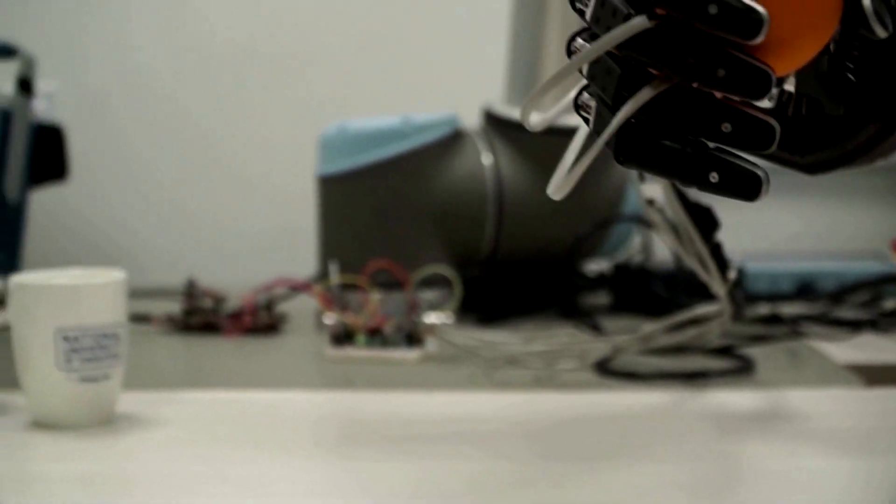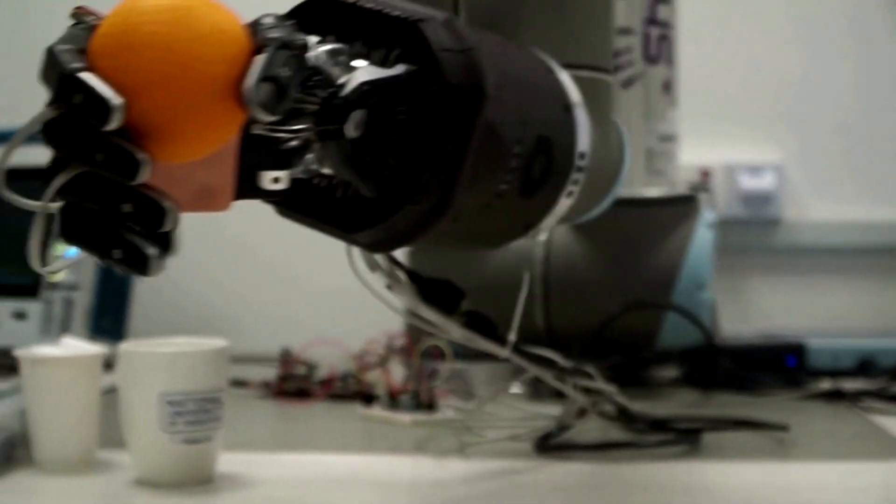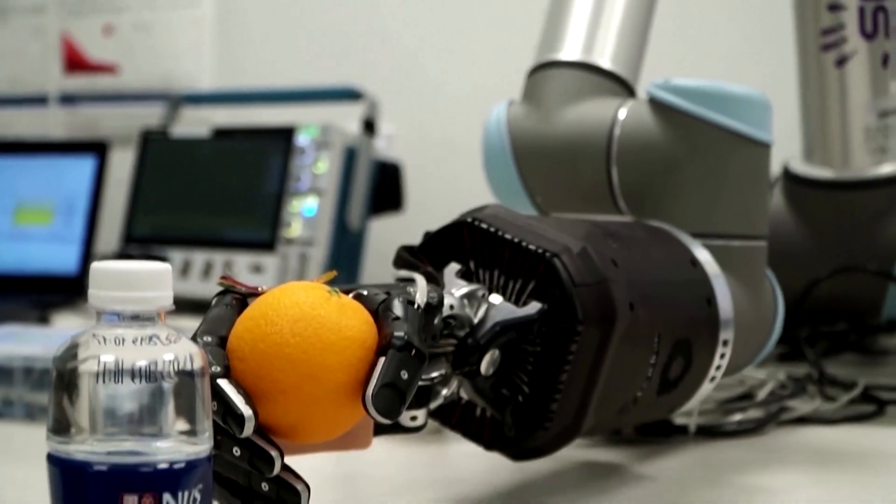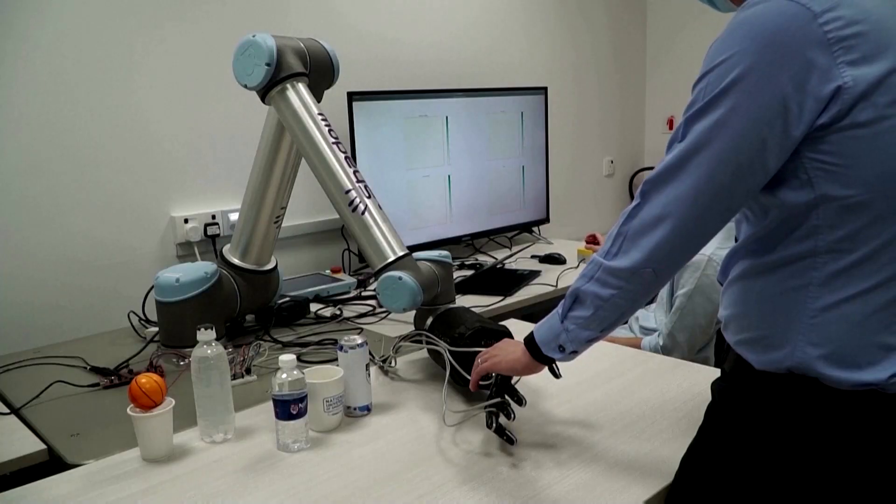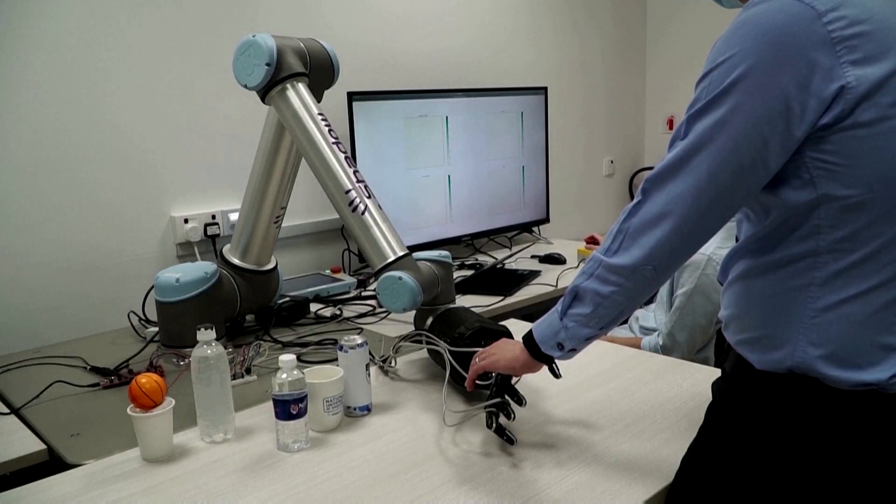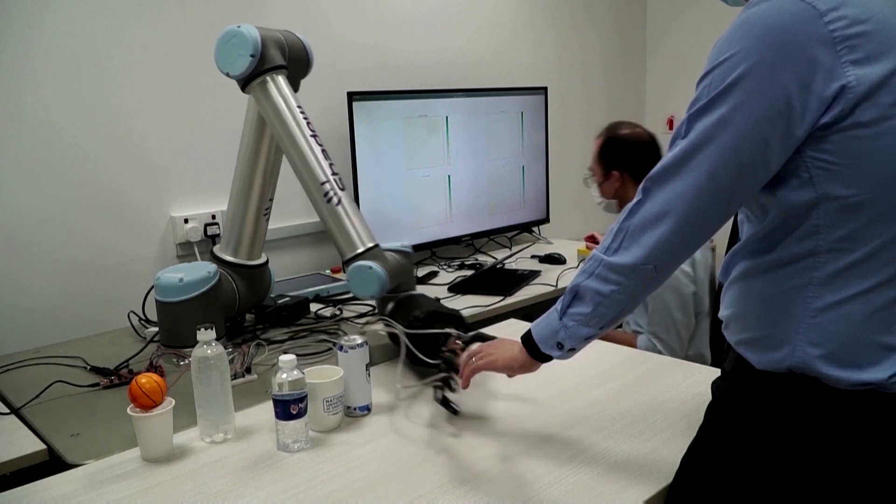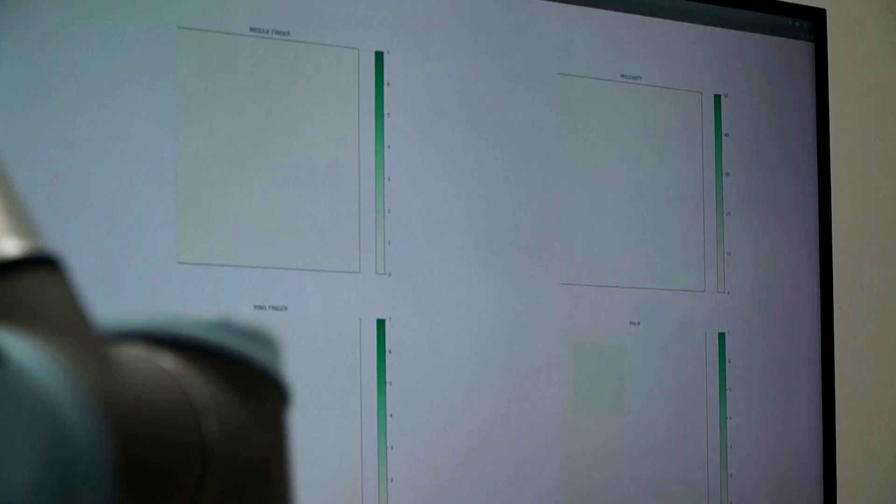When pressure is applied, the metal particles become closer with the polymer matrix, changing the electrical properties. These changes can be picked up by the electrodes connected through flexible wires to a computer, which then tells the robot what to do.